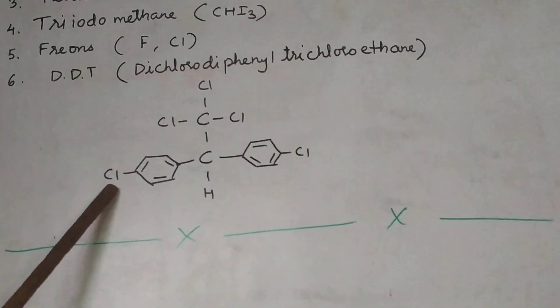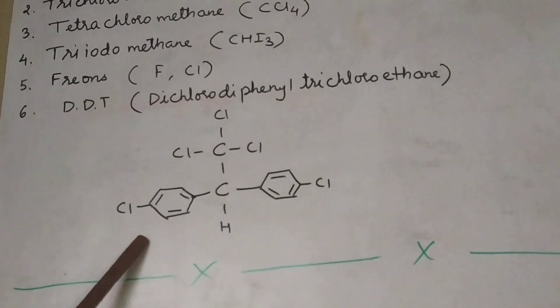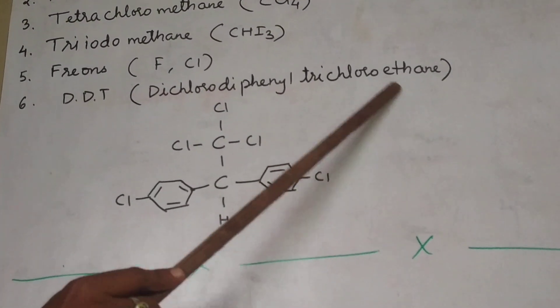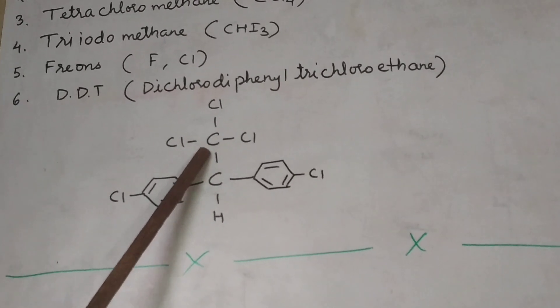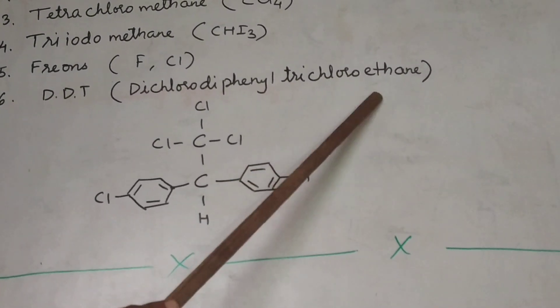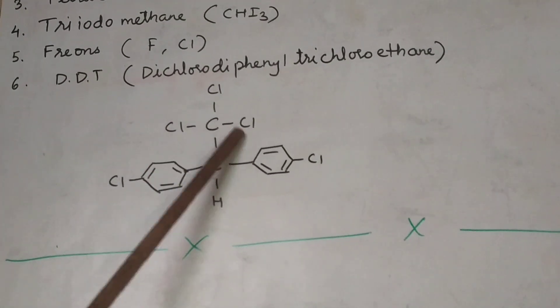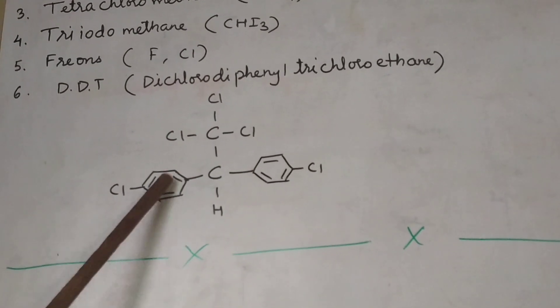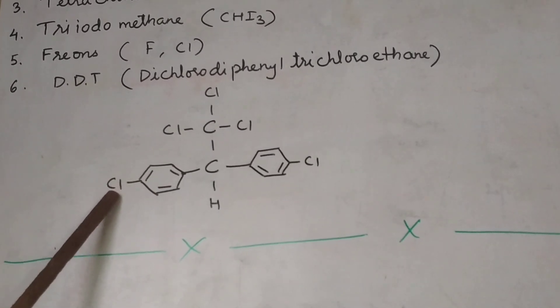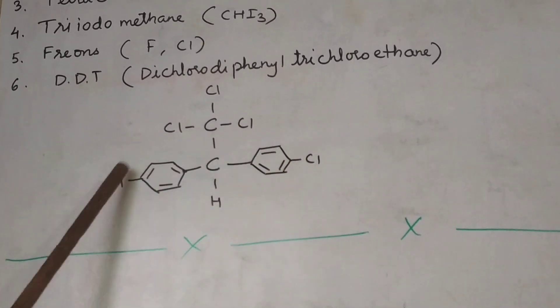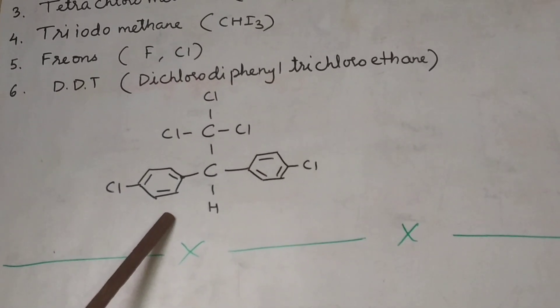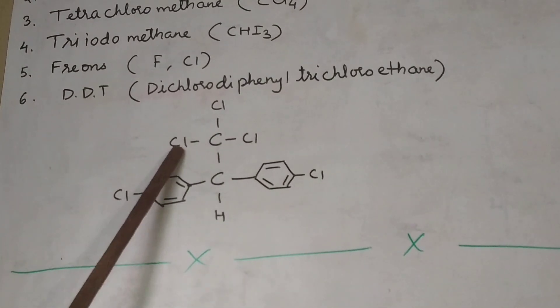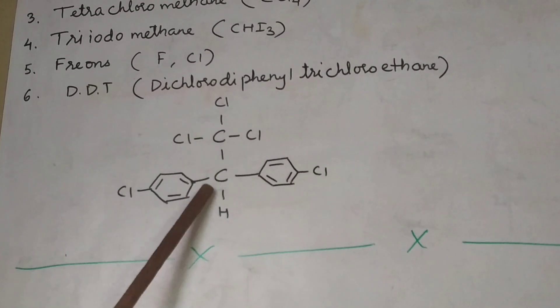Now this is an important part. You can even get a structure. This has come in board examination that writes the structure of DDT. DDT stands for dichlorodiphenyl trichloroethane. Parent is ethane. So ethane, two carbons, one and two, two carbons. Trichloro, diphenyl trichloroethane. See dichloro, diphenyl and trichloro and ethane because two carbons are present. So ethane is the parent.